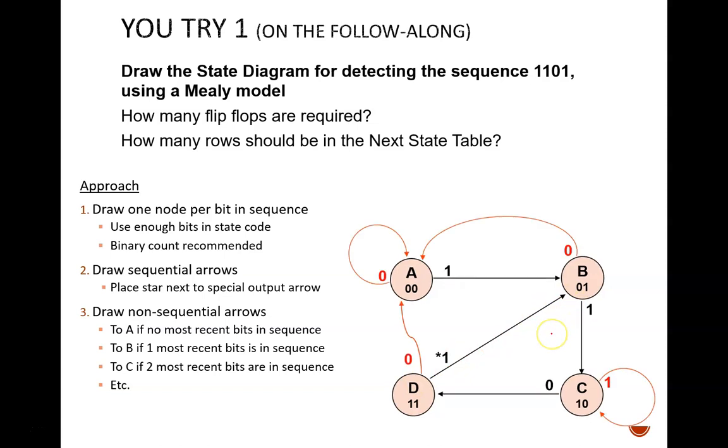Lastly, I draw the non-sequential arrows. For this particular sequence, all of the non-sequential zeros take me back to A. But this 1 leaving C might come as a surprise. It loops right back around to C. Why is this? State C indicates that the last two inputs were 1, 1. To reach this arrow, the last two inputs must be 1, 1. Therefore it takes us to C.